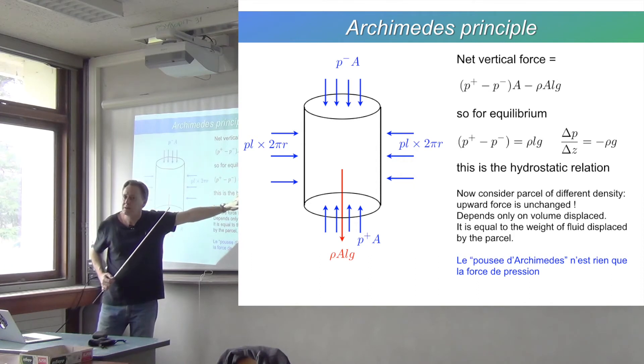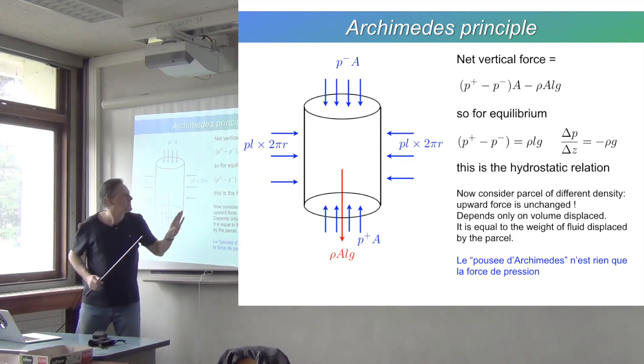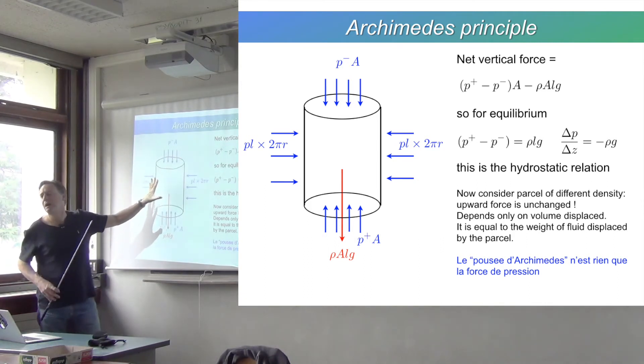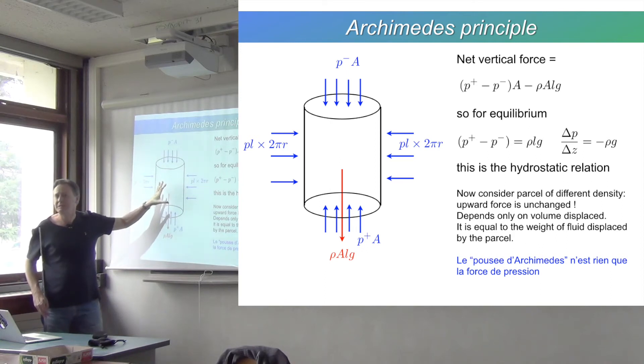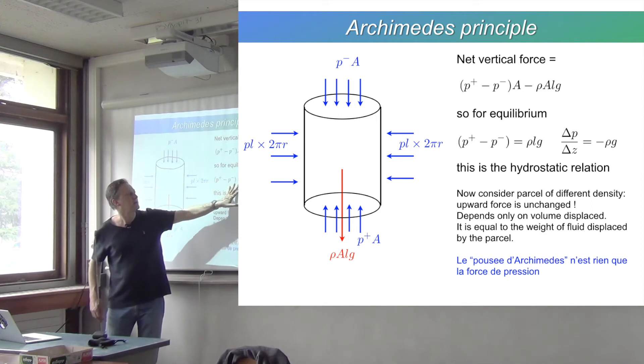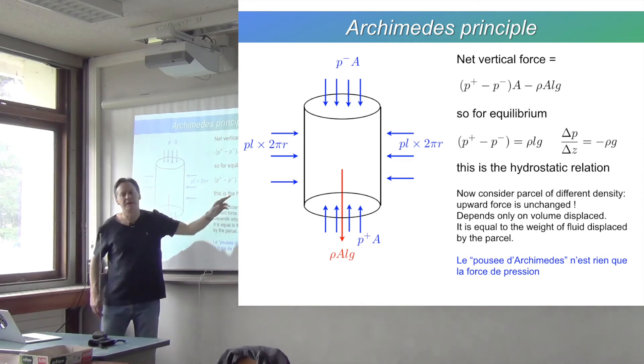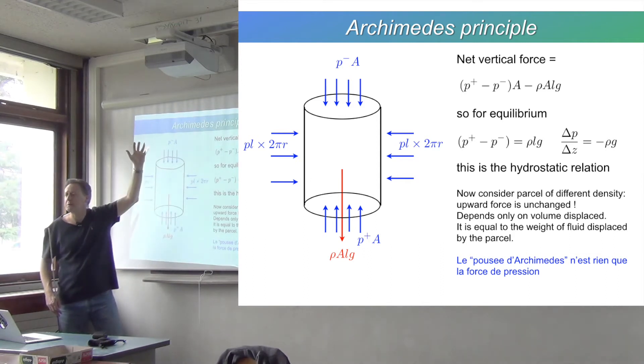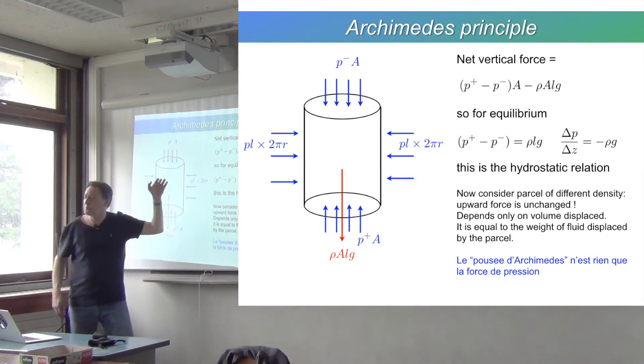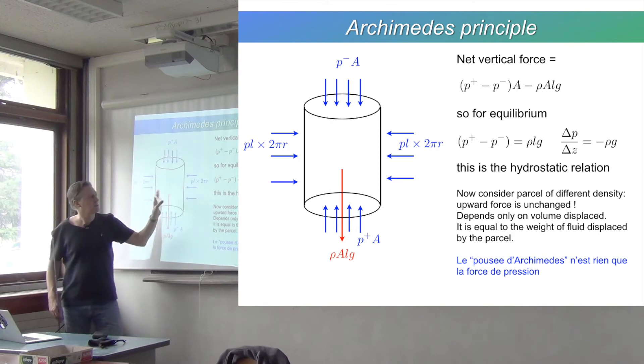Now what happens if inside this volume there is something other than the same water which is outside? Something with a different density? There'll be a net imbalance because this ρ will be either bigger or smaller. If the ρ is smaller then there'll be an upward force—it'll float upwards. If the ρ is bigger, gravity will win and it'll go downwards.